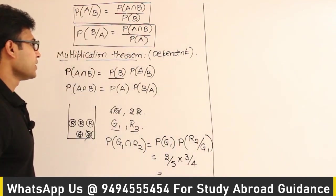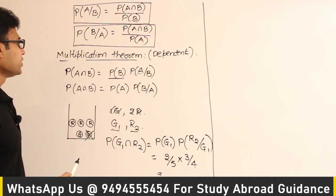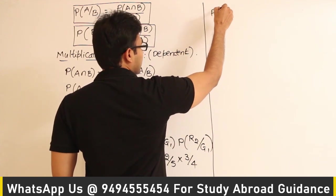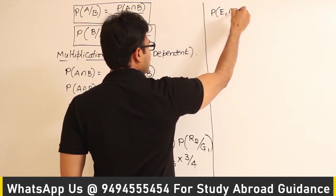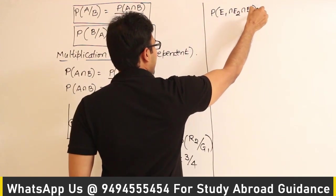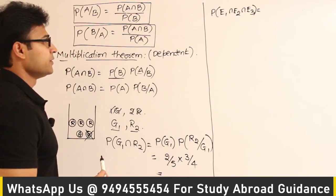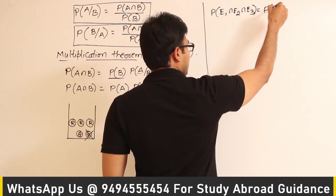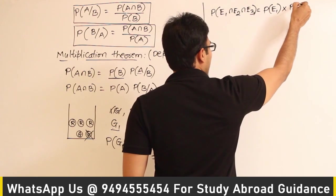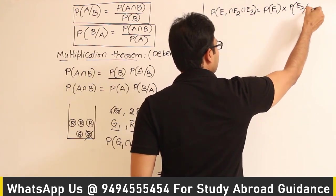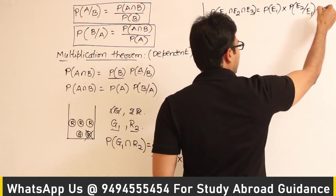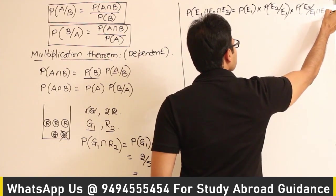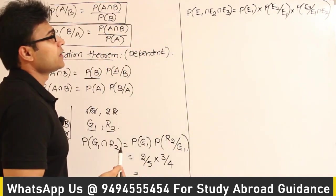The multiplication theorem can even be extended to more than two events. For example, if I want to find the probability of three events E1, E2, and E3 happening simultaneously, it is: P(E1) multiplied by P(E2 given E1 has already happened) multiplied by P(E3 given that E1 and E2 have already happened.